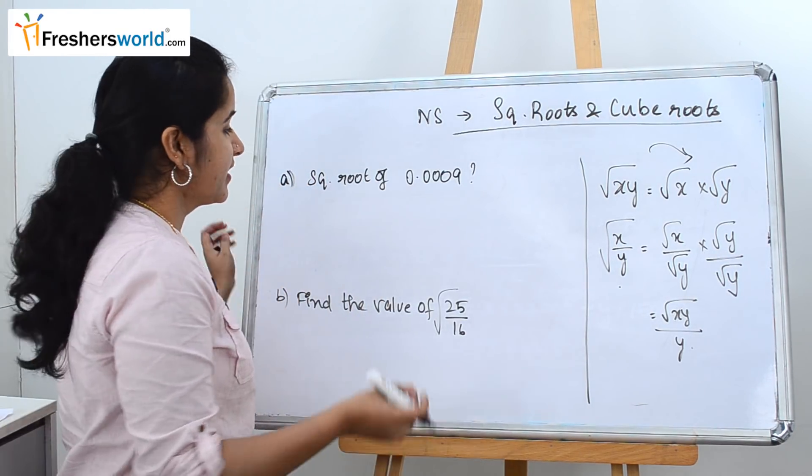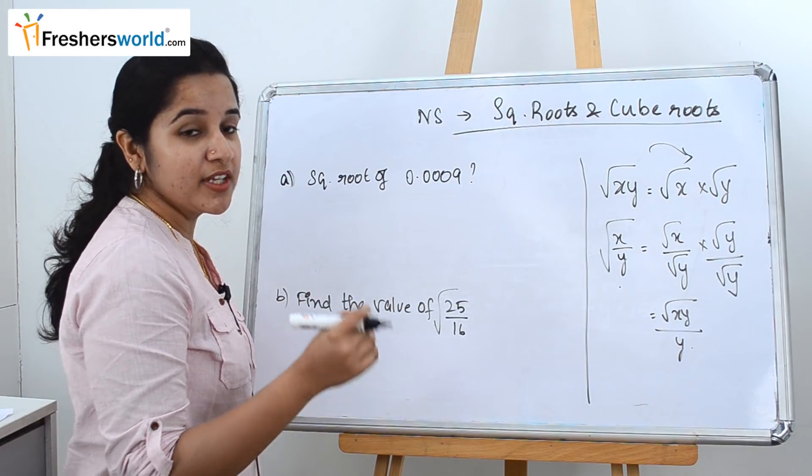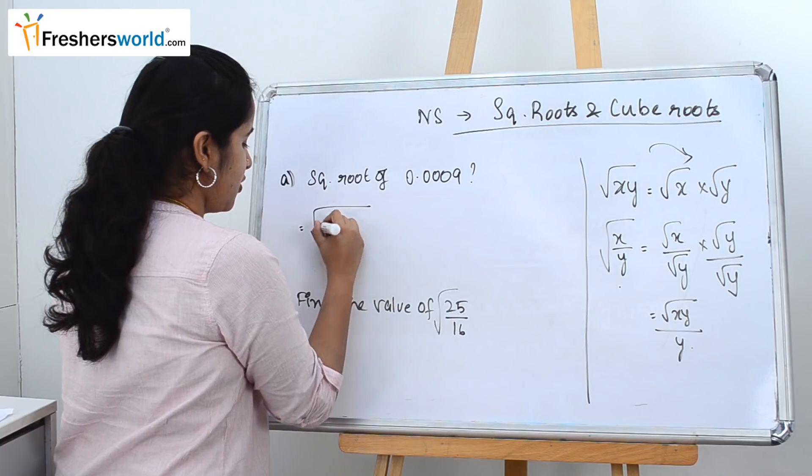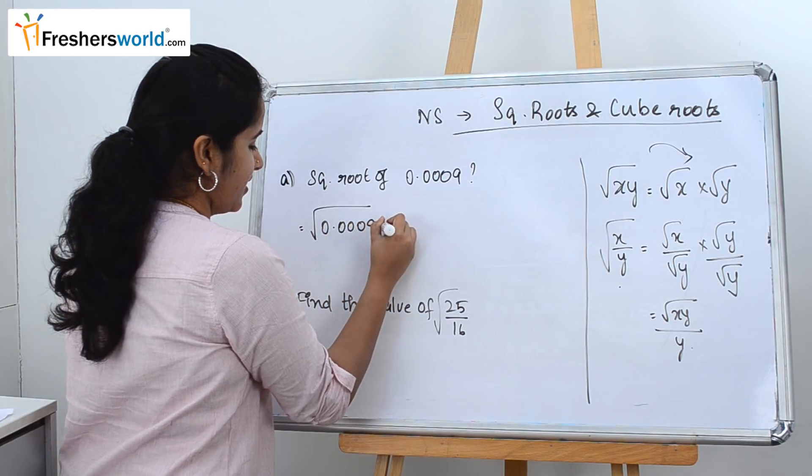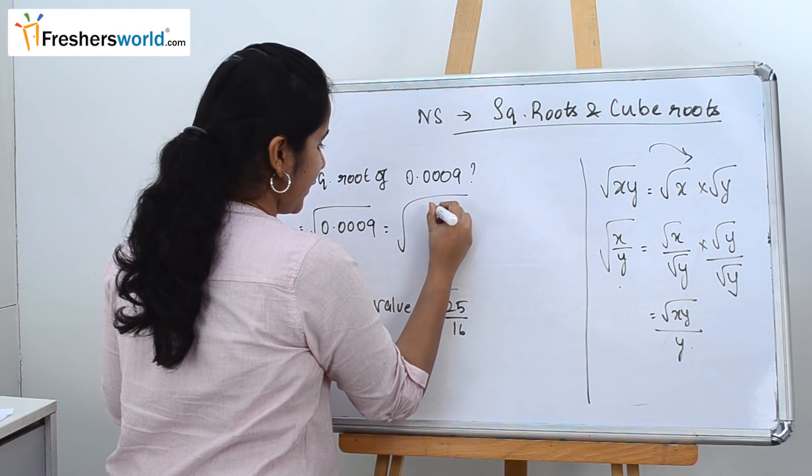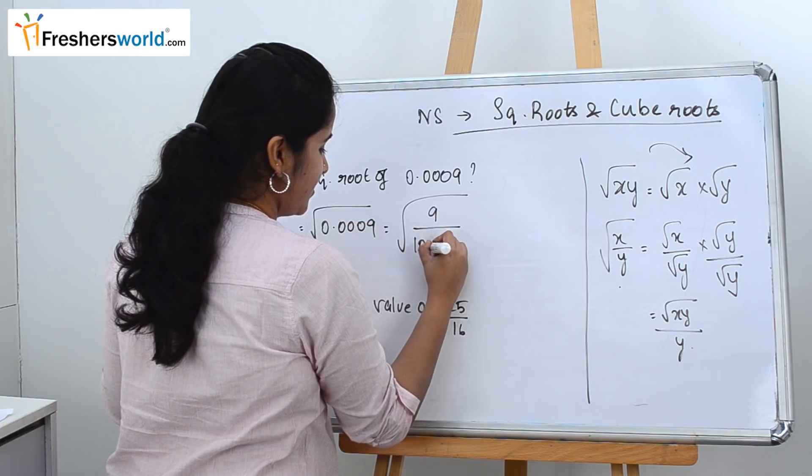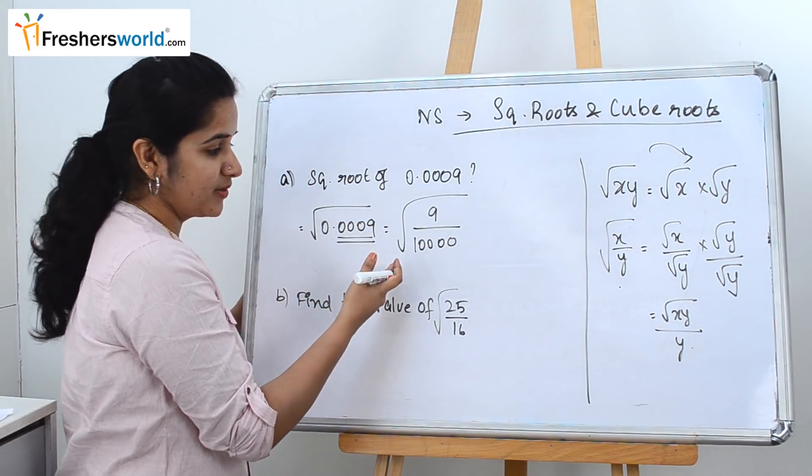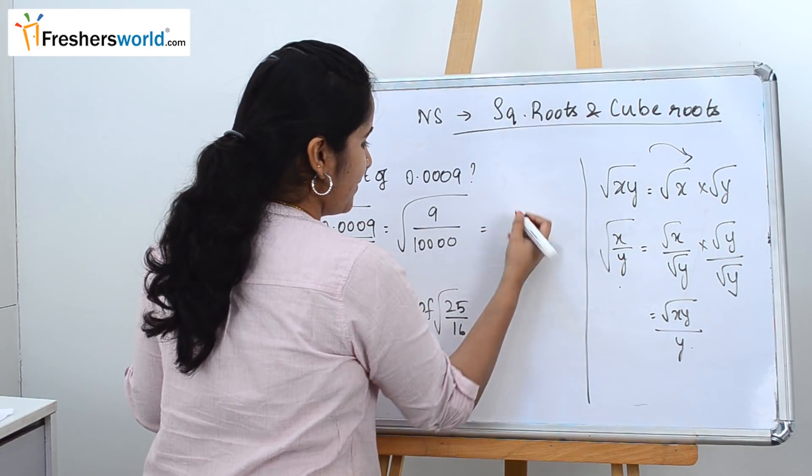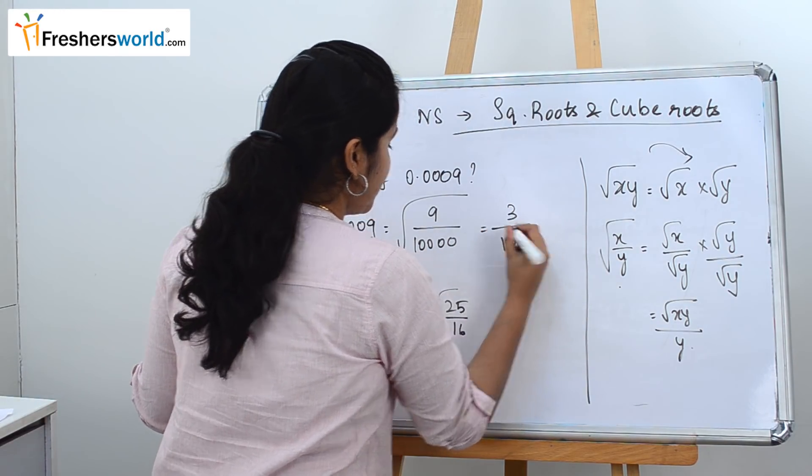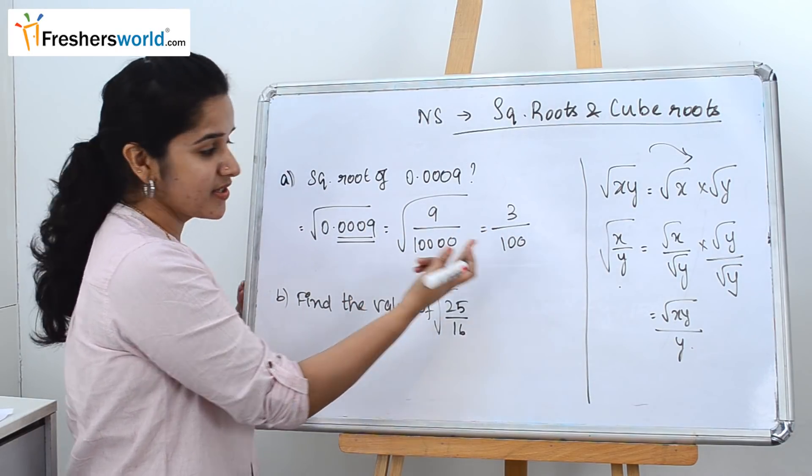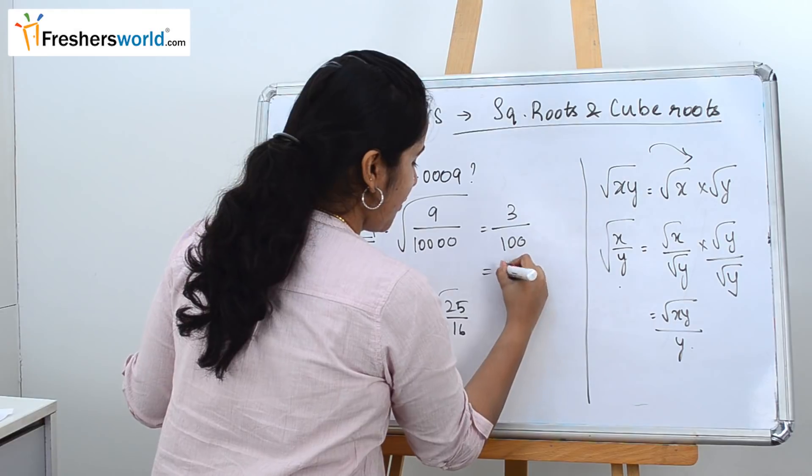The first question is very simple. We are asking you the square root of 0.0009. We know that it can be rewritten as 9 divided by 10,000 because we have 4 digits after the decimal point. We are putting 4 zeros here, which can be written as 3 by 100 because we are removing the square root. Square root of 9 is 3, and square root of 10,000 is nothing but 100, which is nothing but 0.03.